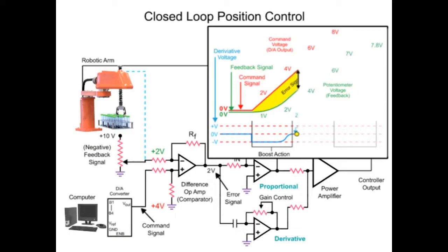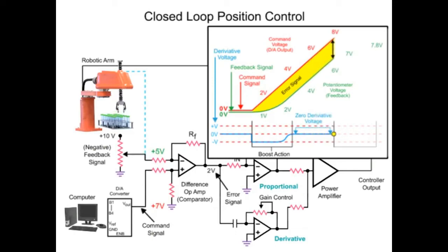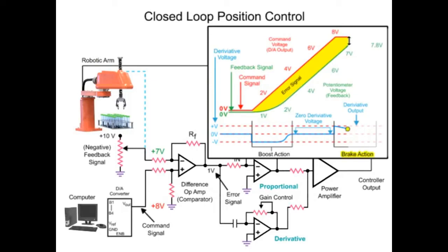As the command signal stops changing, the robotic arm continues to move with a decreasing error signal. As the error is reduced, the derivative amplifier output voltage changes polarity and cancels the proportional voltage. If the error signal decreases too fast, the derivative voltage will be greater than the proportional voltage. When this occurs, the polarity of the power amp is reversed, creating a brake condition to prevent overshooting the desired position.